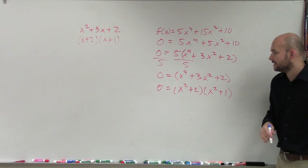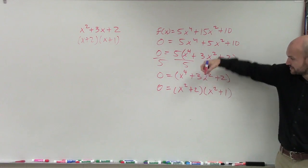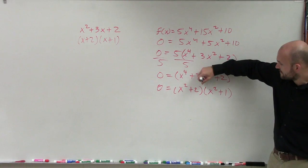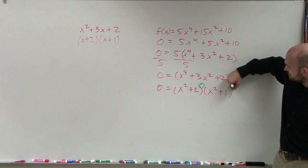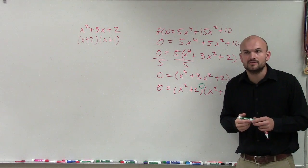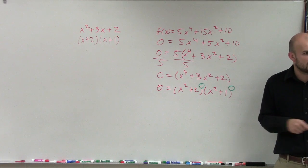Now, notice what our factors are. What are our exponents for our factors? One, so therefore the multiplicity of my zeros is also going to be 1, so that means my graph is going to be crossed.